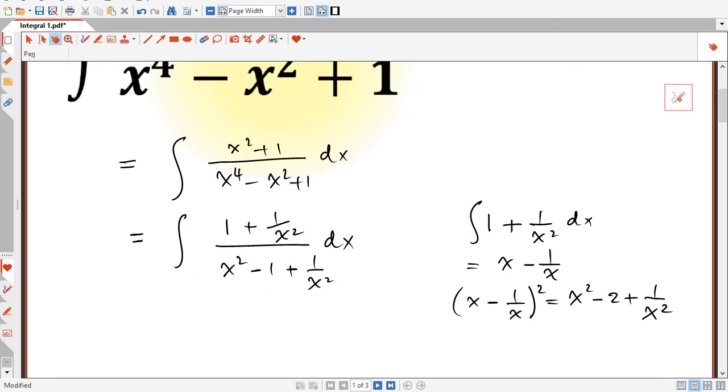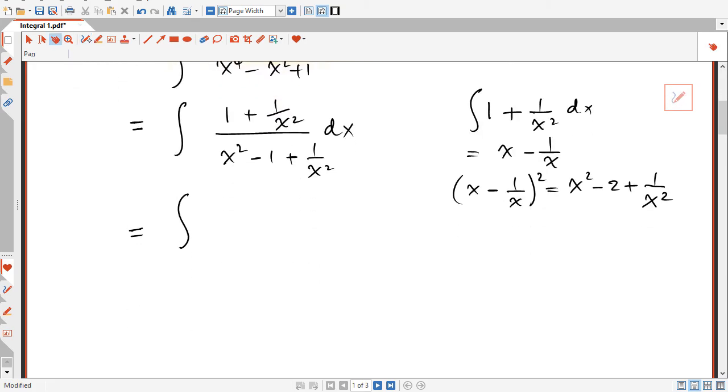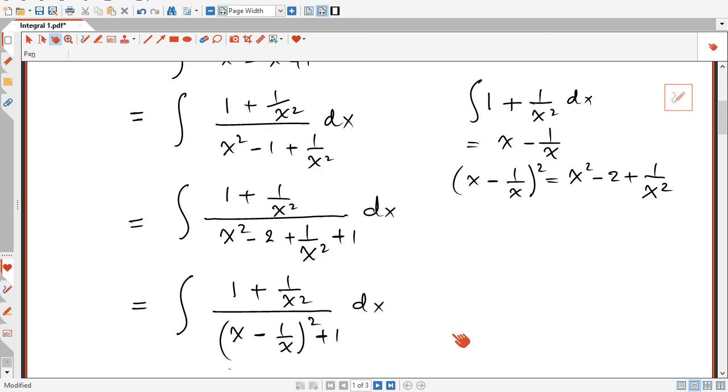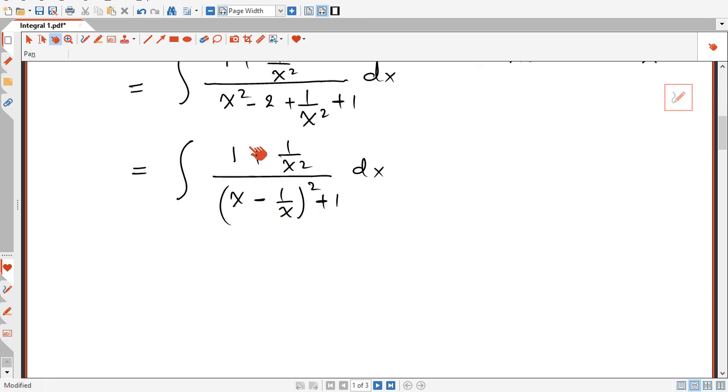So that will give us the integral of (1 + 1/x²) dx over (x² - 2 + 1/x² + 1). So I subtracted 1 and added 1, okay? And that's going to be equal to the integral of (1 + 1/x²) dx divided by—this is a complete square—so it's (x - 1/x)² + 1 dx. So now the derivative of the term here is exactly the numerator.